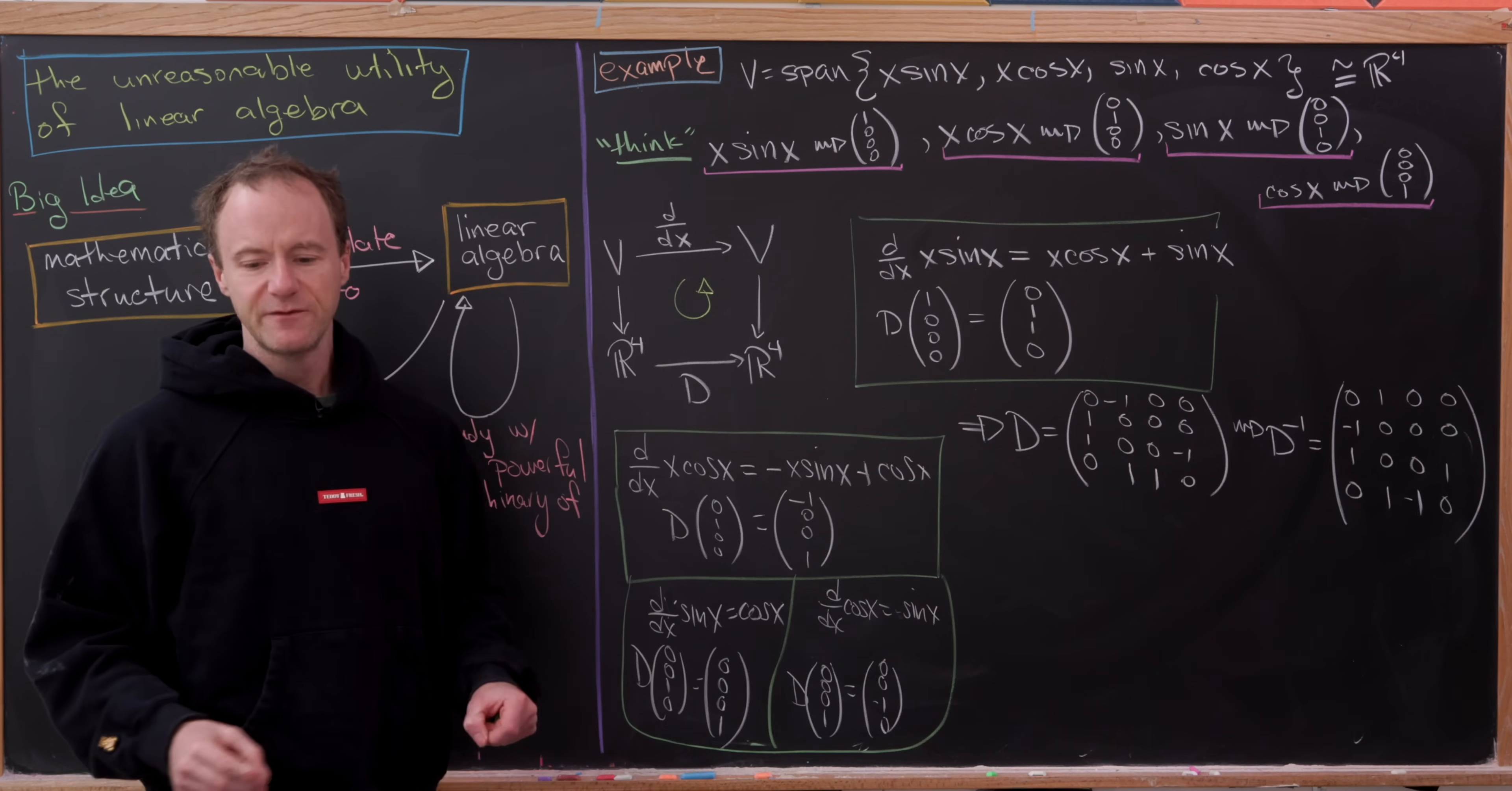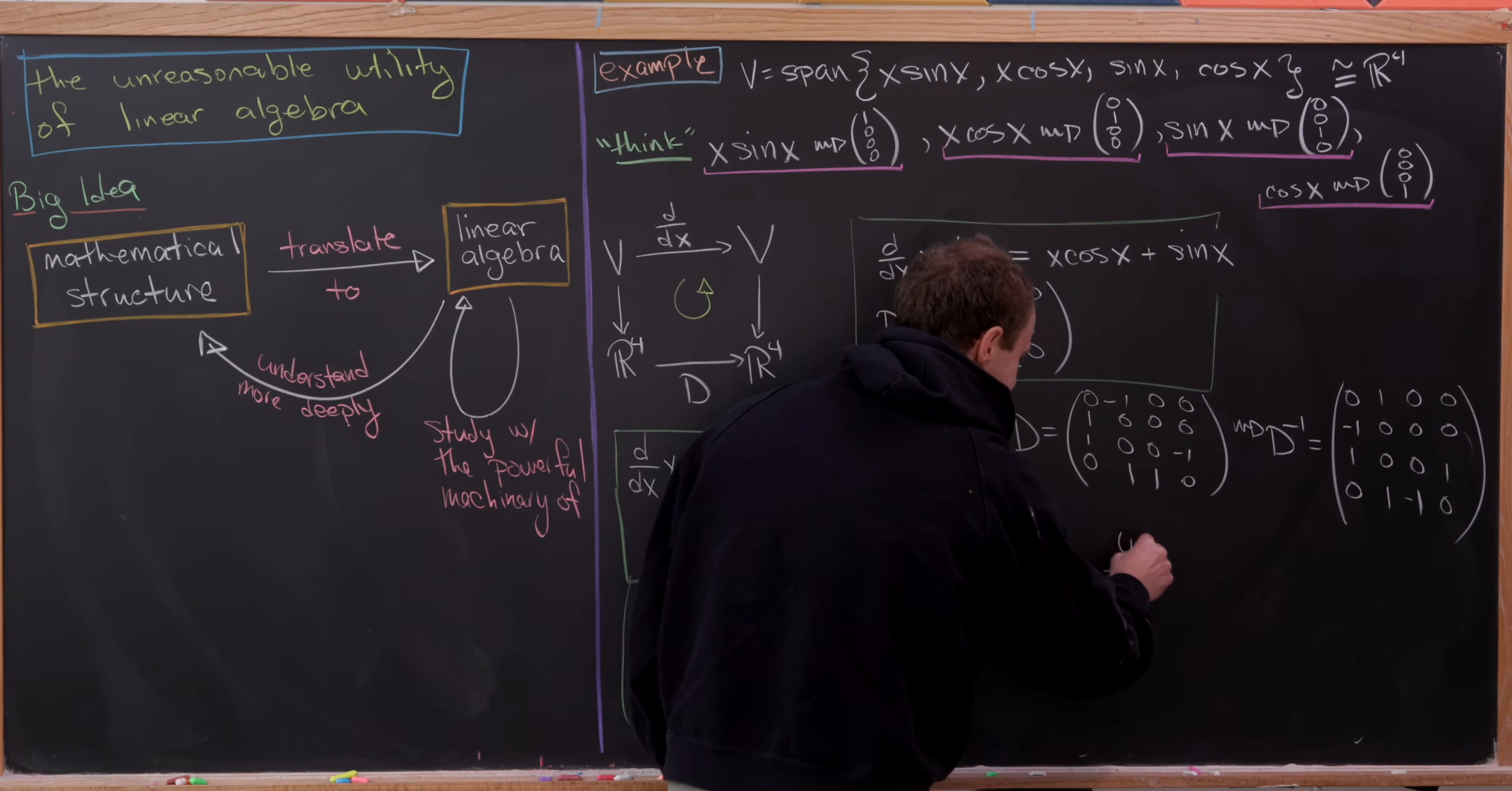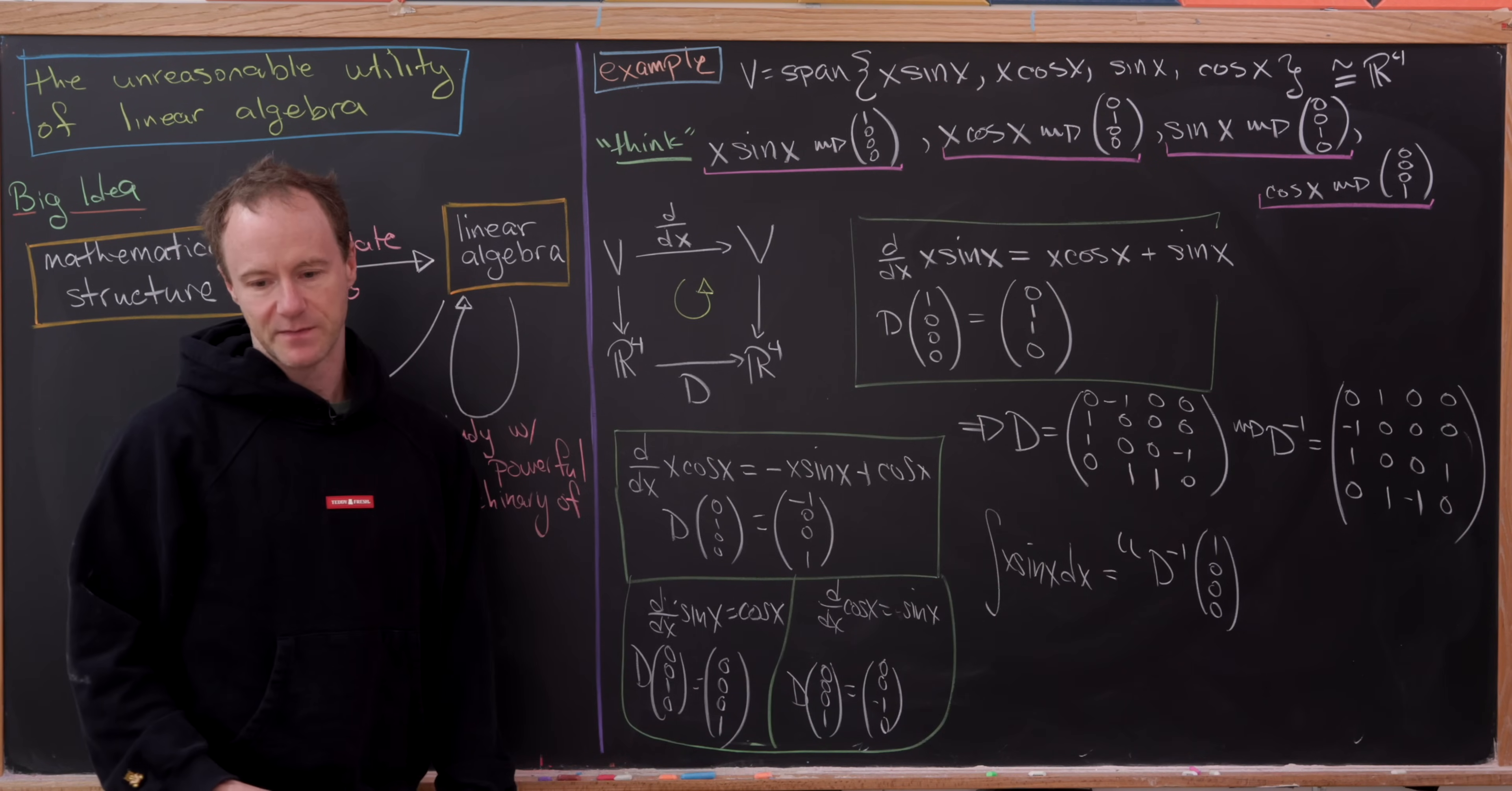Great. So that means if we wanted to do something that would generally be kind of tricky, in fact, involve integration by parts, like the integral of x sine of x dx, we can instead think of this happening within the matrix vector world. So this should be D inverse of 1, 0, 0, 0. Where D inverse is the matrix that I have up there.